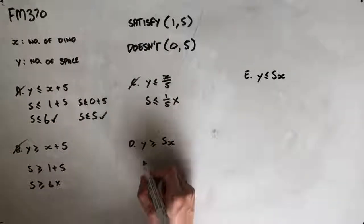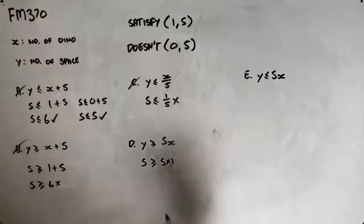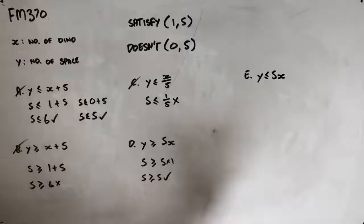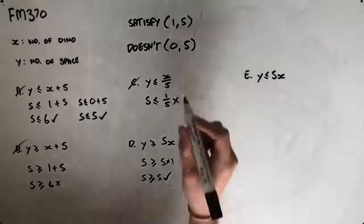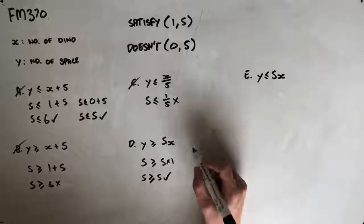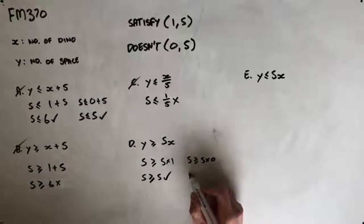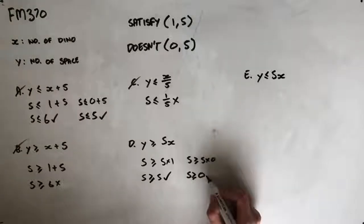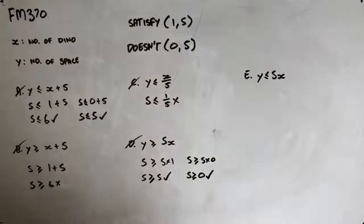Option D: inserting our values, five is greater than or equal to five times one, so five is greater than or equal to five. That works. But inserting the conditions that shouldn't satisfy, we get five is greater than or equal to five times zero, so five is greater than or equal to zero, which it also satisfies. This should not satisfy the inequality, so D is not our correct answer.